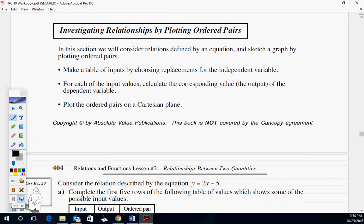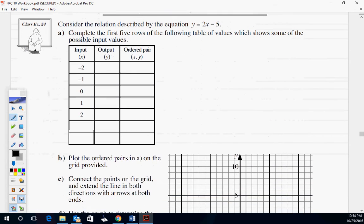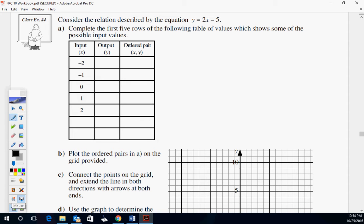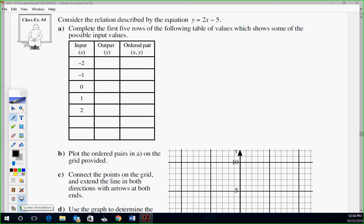Hopefully this is going smoothly so far for you. In this section, we will consider relations defined by an equation and sketch a graph by plotting ordered pairs. Make a table of inputs, choosing replacements in the independent variable. For each of the input values, calculate the corresponding value and the dependent value, and then plot the ordered pairs on the Cartesian plane. Consider relationship described by y equals 2x minus 5. Because my page is too big guys, I'm going to do the table, and I'm going to have to lose the table, and then I'll do the graph. So, make the table first. What we're doing is they gave us inputs.